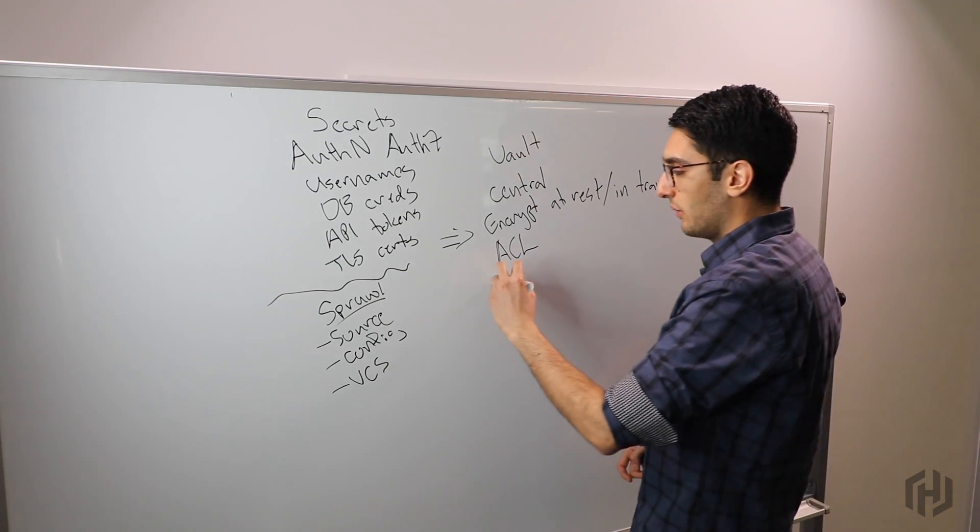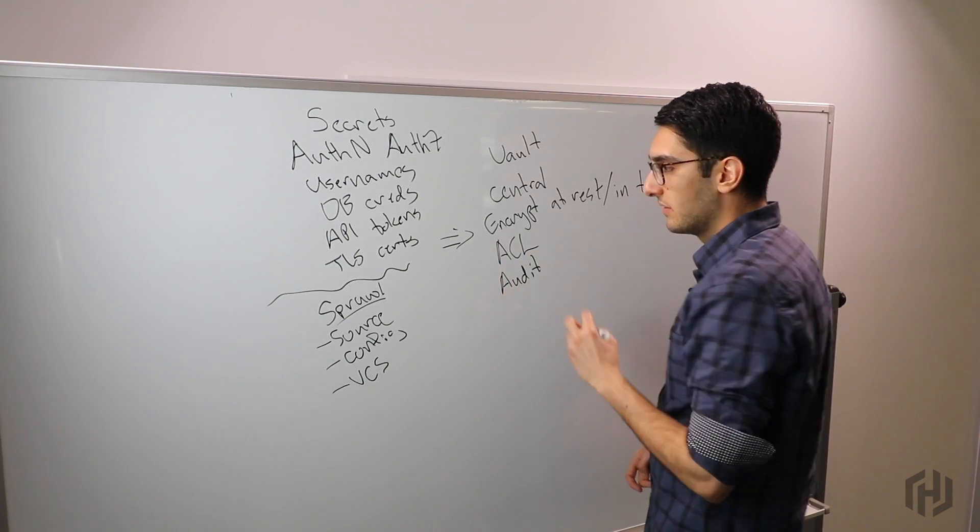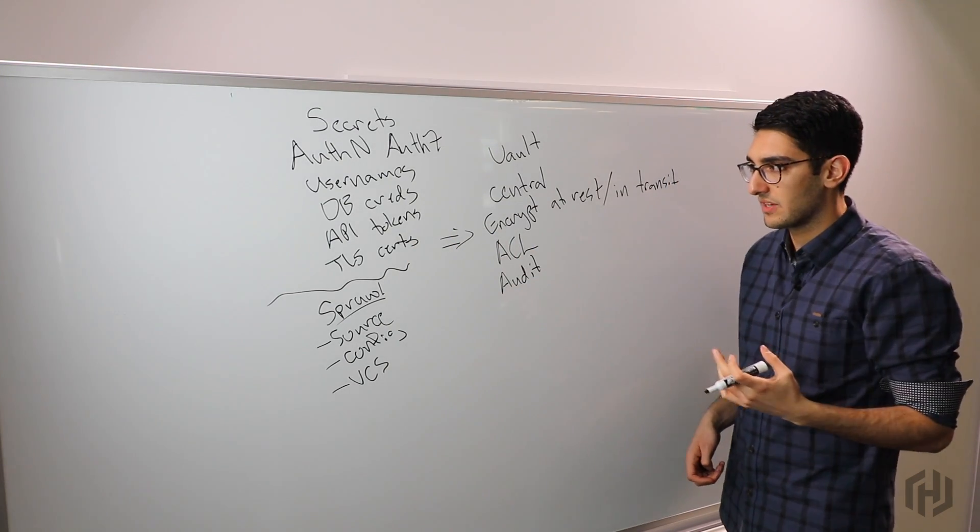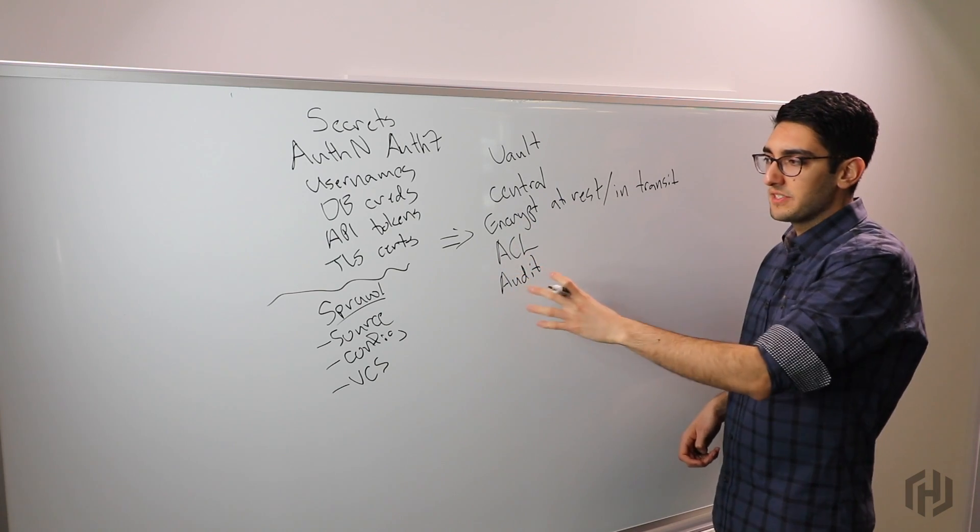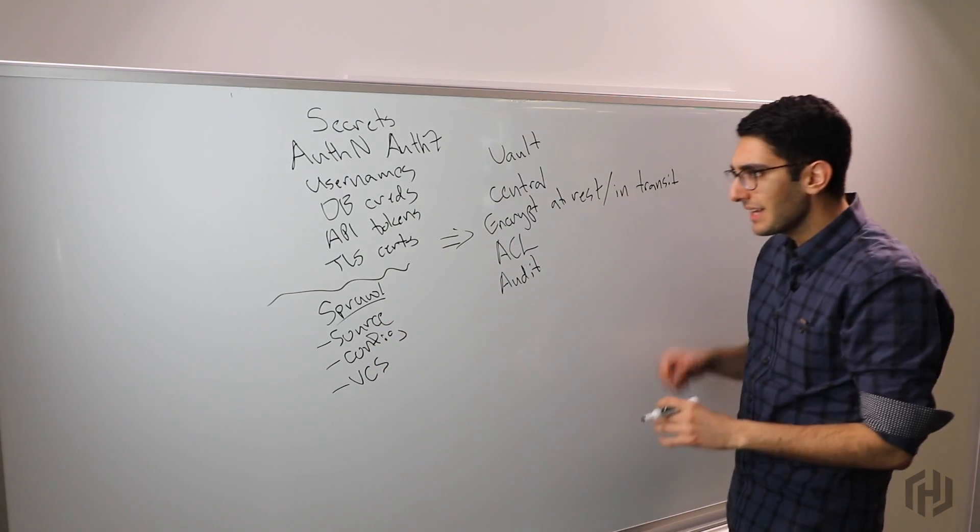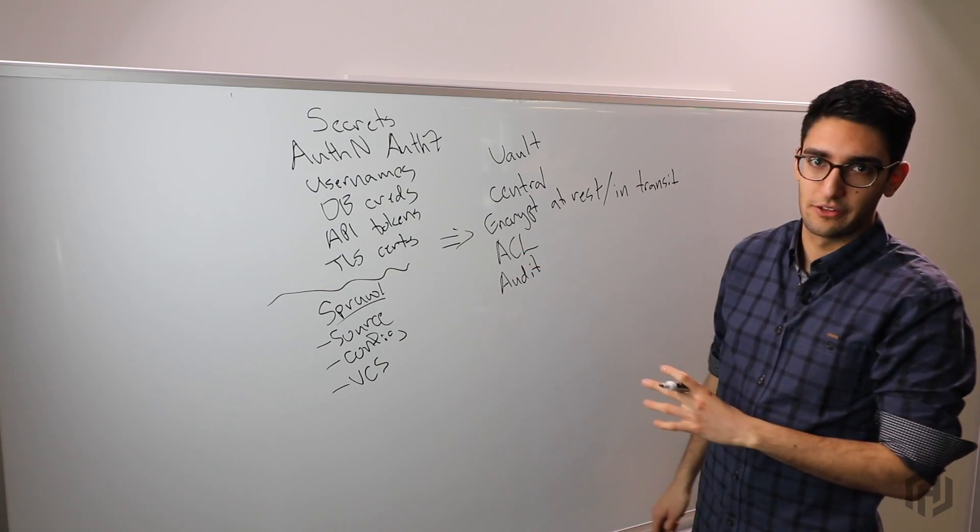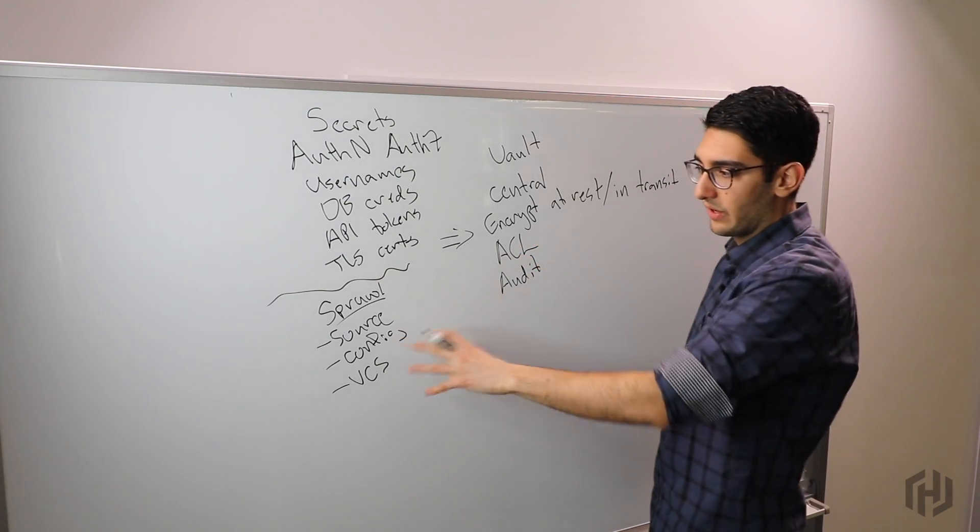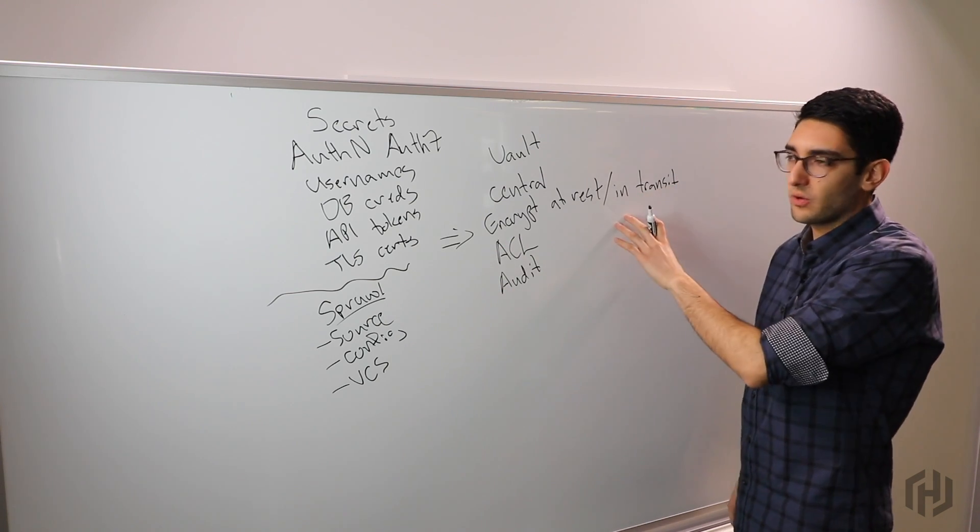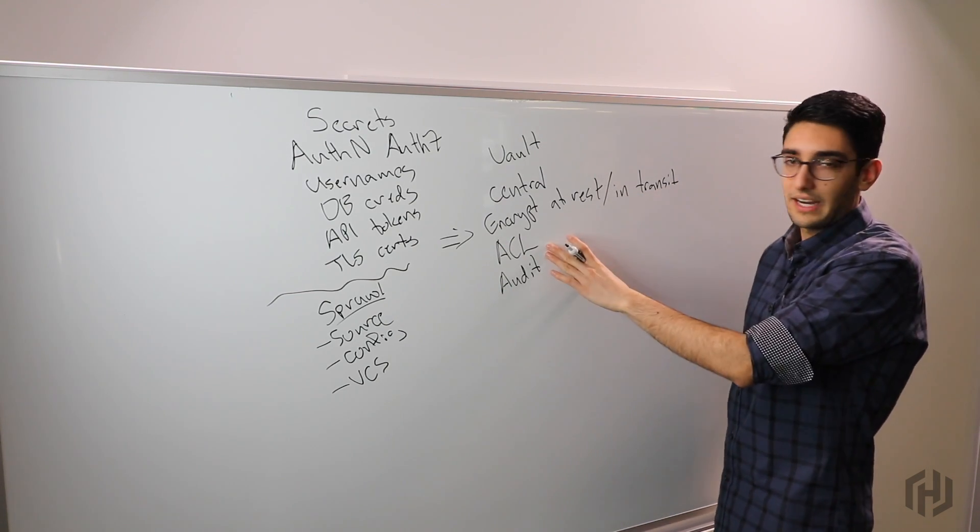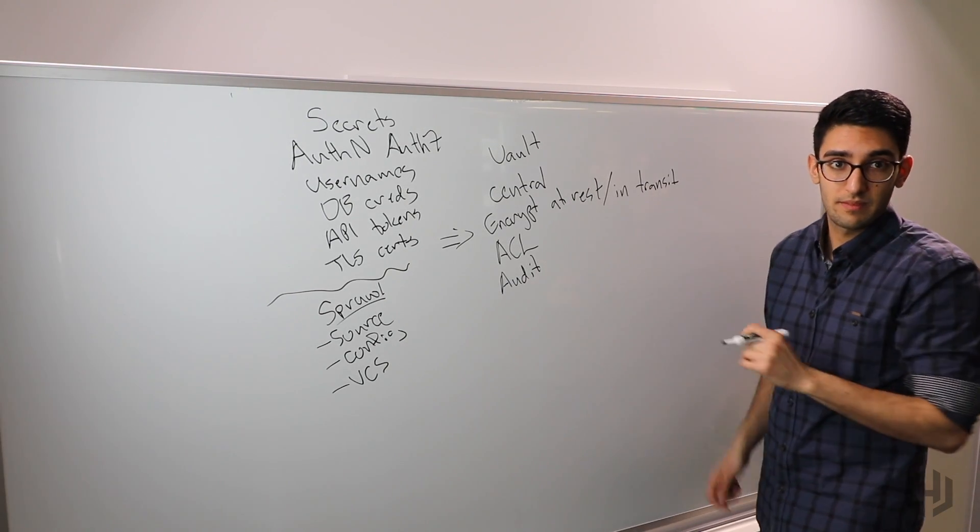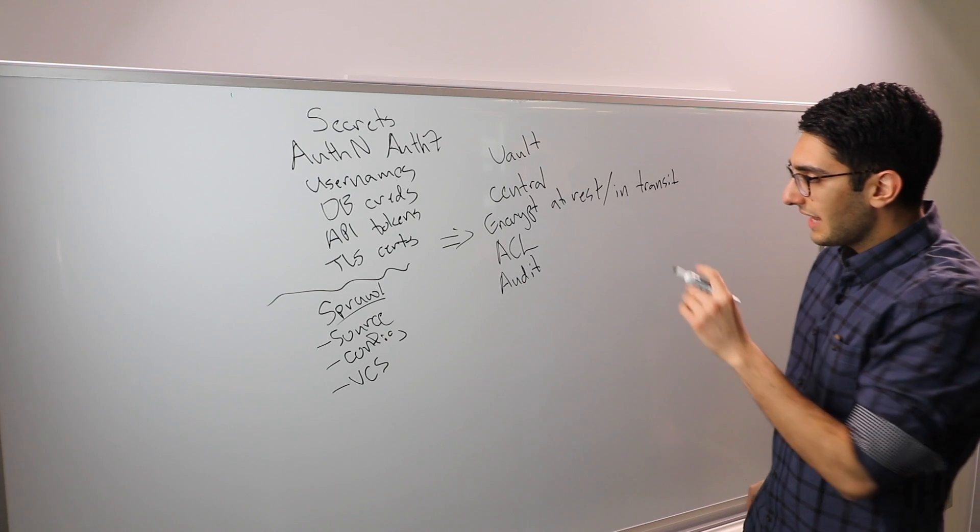On top of this, we have an audit trail. Now we can actually see what credentials the web server accessed, what credentials Arman accessed from the system. We have much more visibility and control over how these things are managed. This is the level one challenge with Vault: moving from a world of sprawl where things are everywhere to a world of centrality where we have strong guarantees that it's encrypted, strong guarantees around who has access, and strong visibility into this.